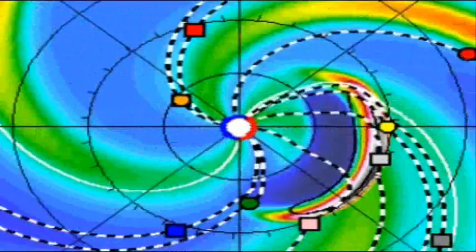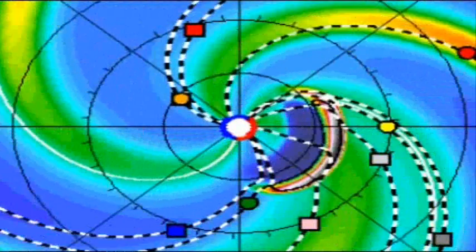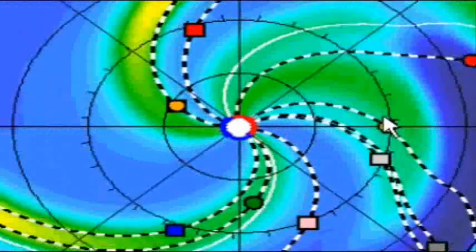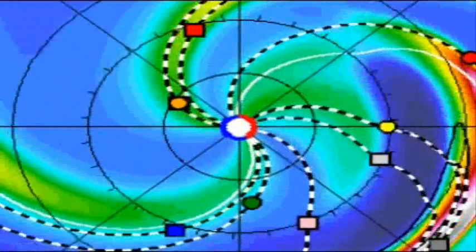So, heads up, M3 coming at us almost directly at Earth, Earth being the yellow ball right over here. So, we'll see what this brings. You guys have a good evening.